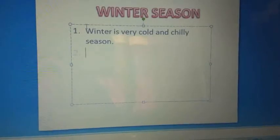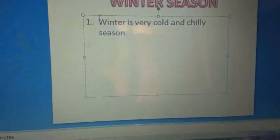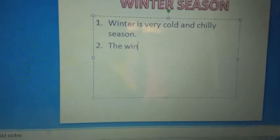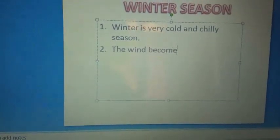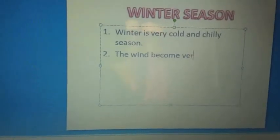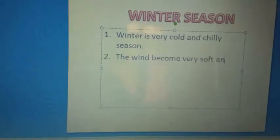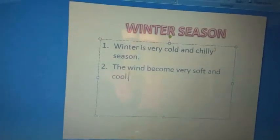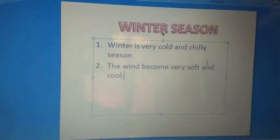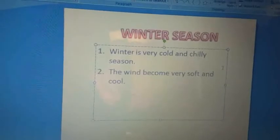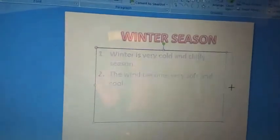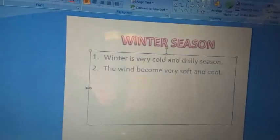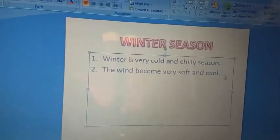I press enter and number 2 point arrives. The wind becomes very soft and cool. The placeholder is very small, so the line comes into the next line. I just increase the placeholder size so that the line can be adjusted in one line.